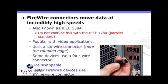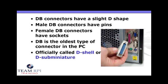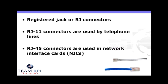FireWire connectors move data at incredibly high speeds. You'll also see these referred to as IEEE 1394s. Most popular video applications are going to use a FireWire connector. These, just like USB, are also hot-swappable. Then you have your DB connectors, given their name by the slight D shape of the connector itself, usually found with old printers. And then your RJ connectors — you'll need to understand two different types: RJ11s, which plug into the telephone line, and RJ45s that plug into the network interface card, or NIC.